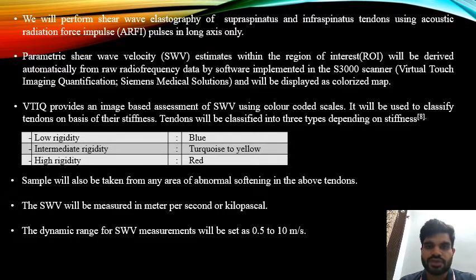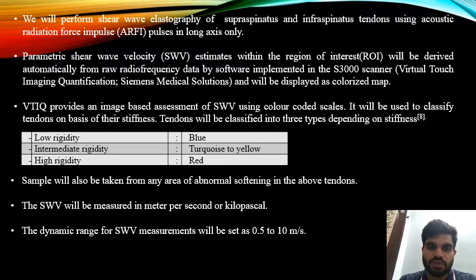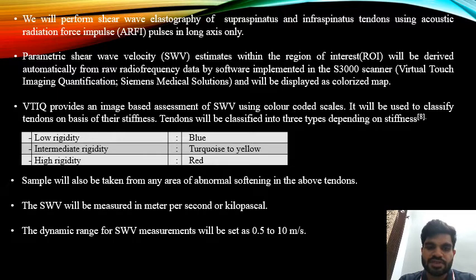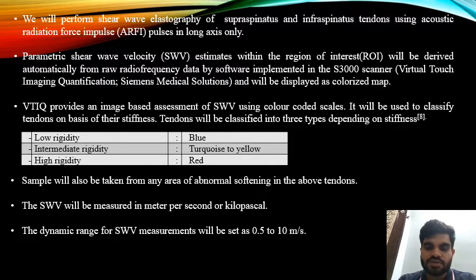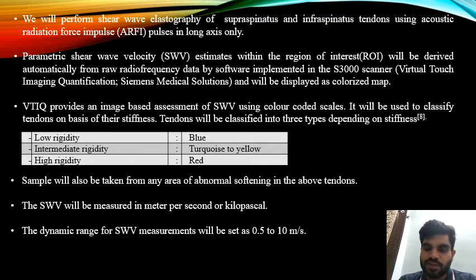Shear wave elastography of supraspinatus and infraspinatus tendons was performed using acoustic radiation force impulse pulses in long axis only. Parametric shear wave velocity estimates within the region of interest were derived automatically from raw radiofrequency data by software implemented in the S3000 scanner — Virtual Touch Imaging Quantification (VTIQ) — and displayed as a colorized map. VTIQ provides image-based assessment of shear wave velocity using color-coded scales to classify tendons by stiffness: low rigidity shown in blue, intermediate rigidity in turquoise to yellow, and high rigidity in red. Shear wave velocity was measured in meters per second or kilopascals, with a dynamic range of 0.5 to 10 m/s.